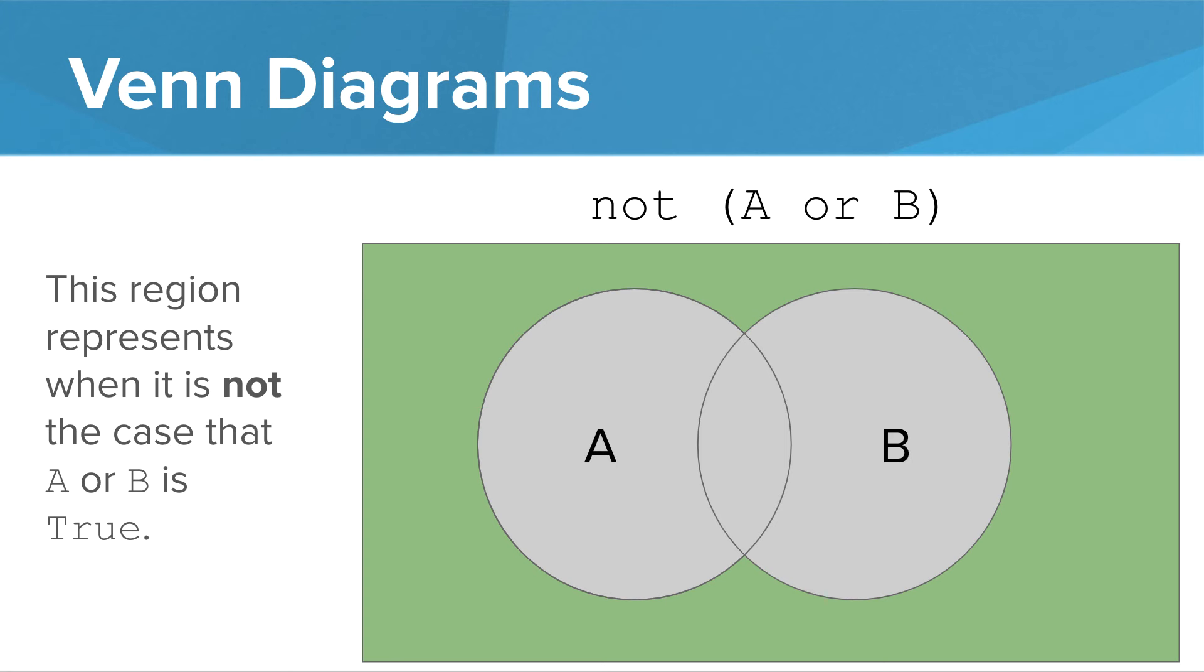This region represents when it is not the case that A or B is true.